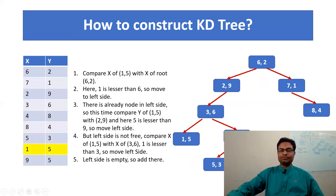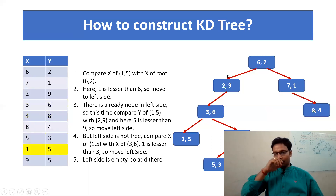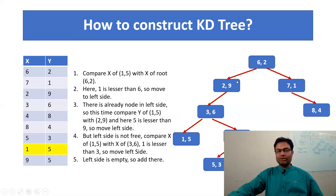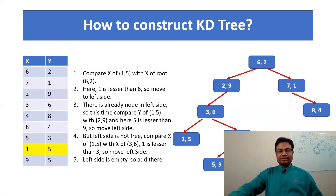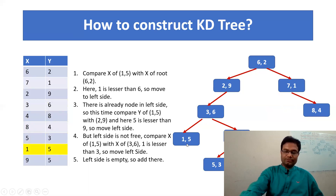Now let's see (1, 5). Again compare starting from the root: 1 compared to 6 — 1 is less than 6, so it goes to the left side. We already have one node there (2, 9). This time check y: 5 and 9 — 5 is less than 9, so again go to the left side. But this time check x: 1 and 3 — 1 is less than 3, and the left side has no node. So we add (1, 5) to the left side of (3, 6).